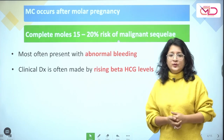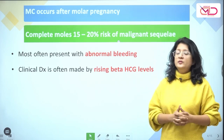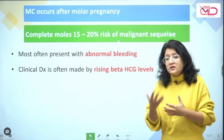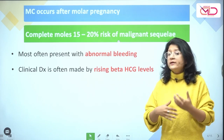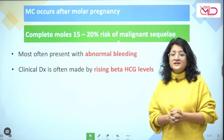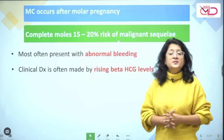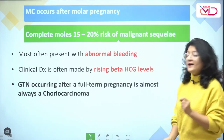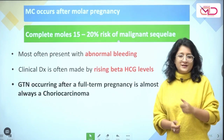For example, a woman may have recently delivered and is continuing to have abnormal bleeding. The clinical clue would be that the bleeding is not responding to usual medication, hormonal treatment, or repeated D&Cs, and still there is no relief. Under those circumstances, suspect GTN and at least check for serum beta-HCG levels. Also remember that GTN occurring after a full term pregnancy is almost always a choriocarcinoma.